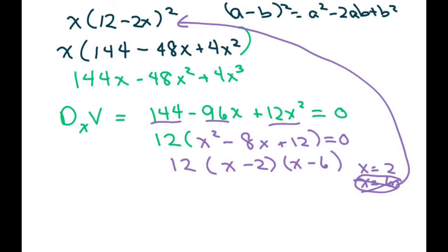So the maximum volume would be 2 times, since it's a square, you're going to write that maximum volume is 2 times 8 squared, which equals 128 cubic inches.